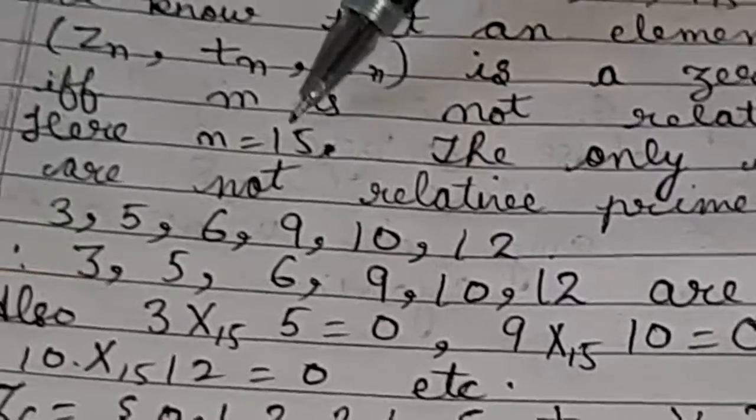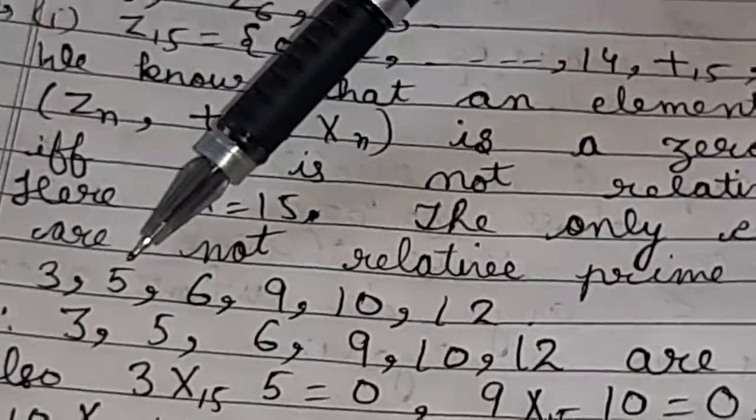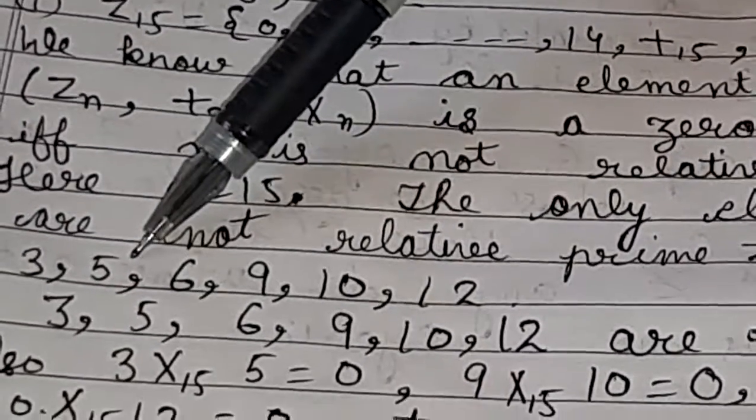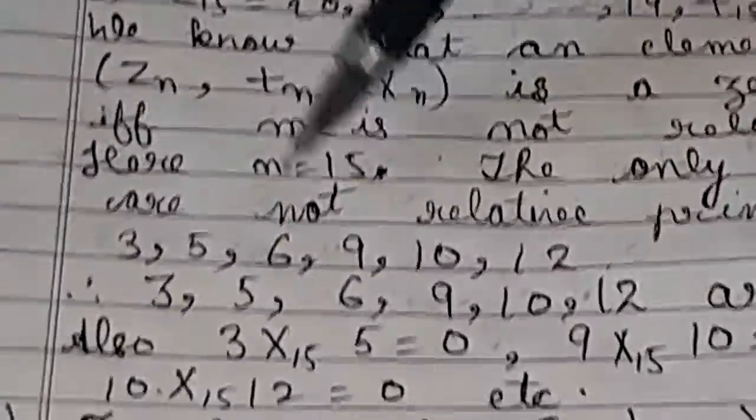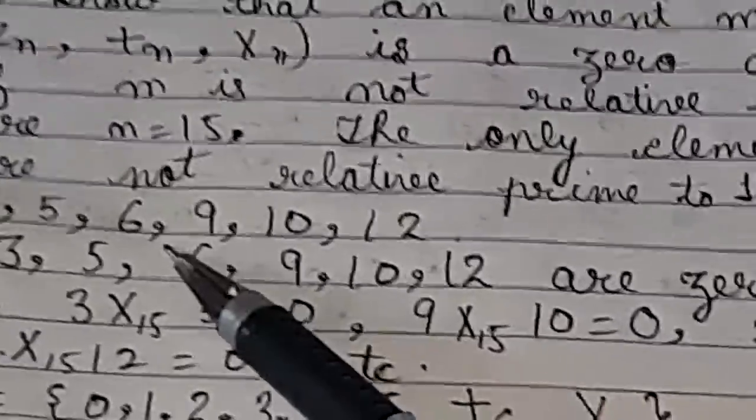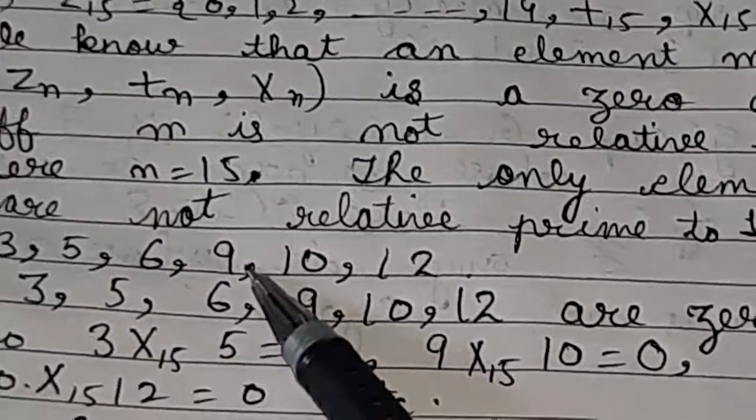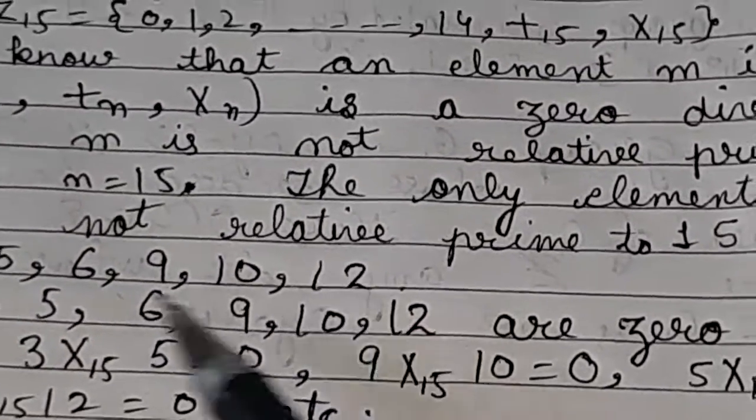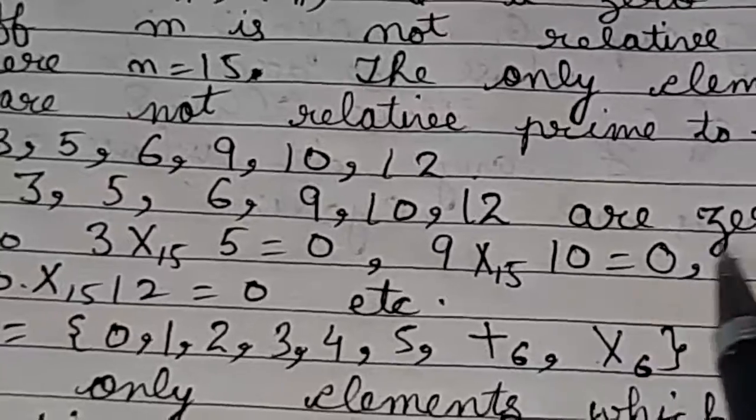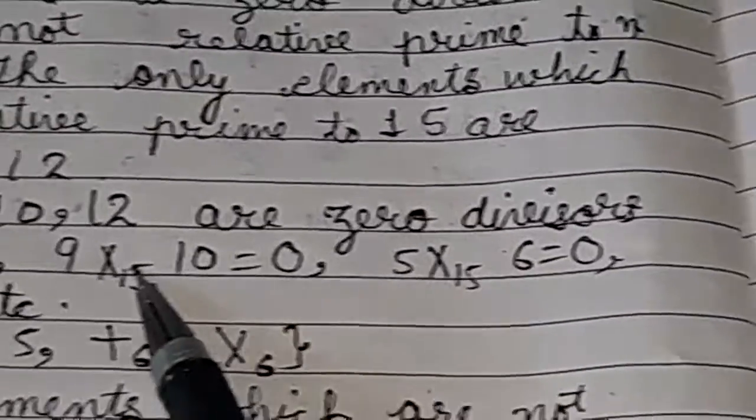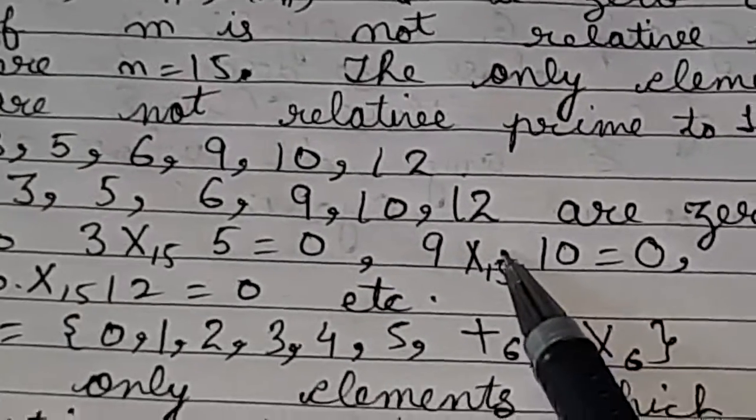5 can be taken common from 5 and 15 so 5 is not relatively prime. Next is 6, as 3 is taken common, next is 9, next is 10, next is 12. So all these elements are zero divisors as these are not relatively prime with 15.